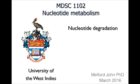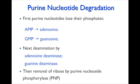We're now going to look at nucleotide degradation. In this particular slide we have AMP and GMP, which are purines. These are first converted to adenosine and guanosine — they lose their phosphates. Next we get deamination, which is a reversal of the synthesis: adenosine deaminase removes NH2 from adenosine, and guanine deaminase does the same for guanosine.